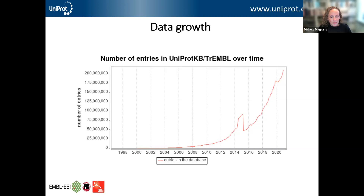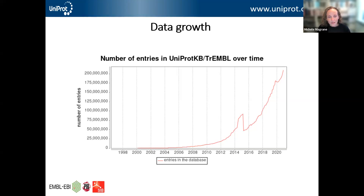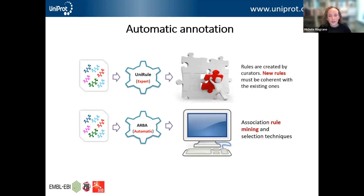Manual expert curation is really key for providing high quality information. But the rate of protein and nucleotide sequencing continues to increase, so we continue to have huge numbers of new sequences entering the database. The unreviewed TrEMBL section is continuing to grow and manual curation can't keep up with this huge influx. Also, many of these sequences haven't been characterized, so there is no published data available for them. It's important that we have ways to enhance the information for these uncharacterized proteins, so we use a number of automated systems.